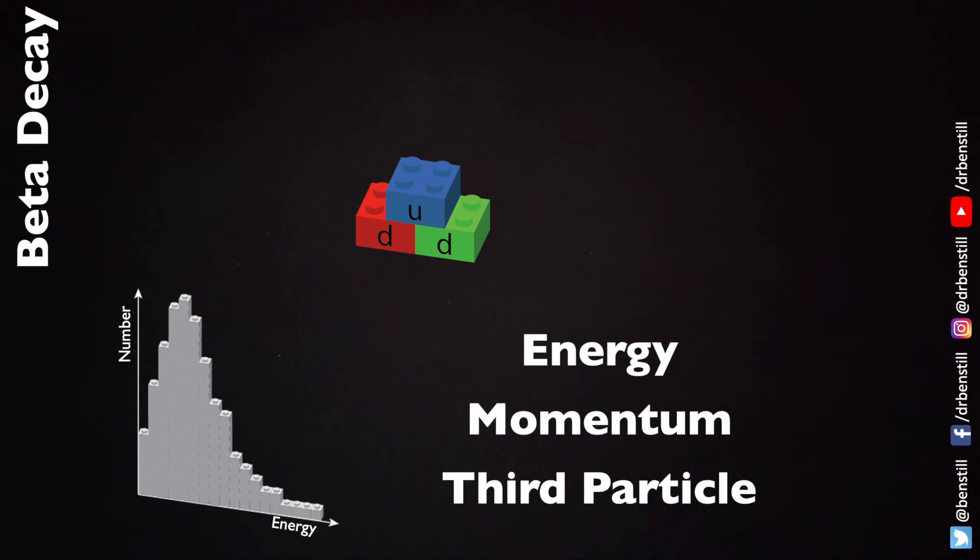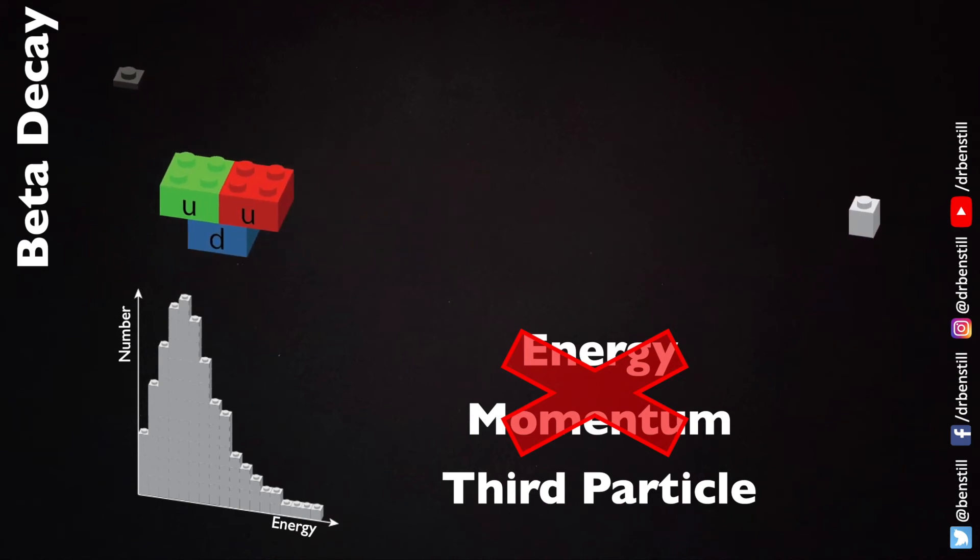Of course nobody wanted to give up energy or momentum conservation and so the idea of the third particle became the most prominent prediction, put forward in 1930 by Wolfgang Pauli as a desperate solution. But in fact there was a third particle being emitted and that became known as the neutrino or little neutral one.